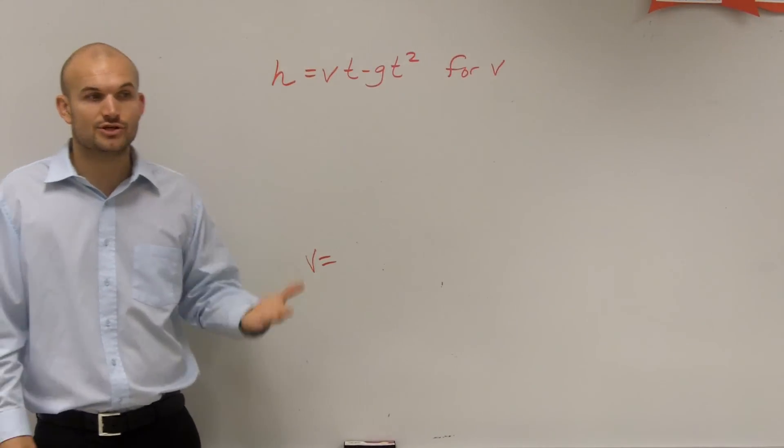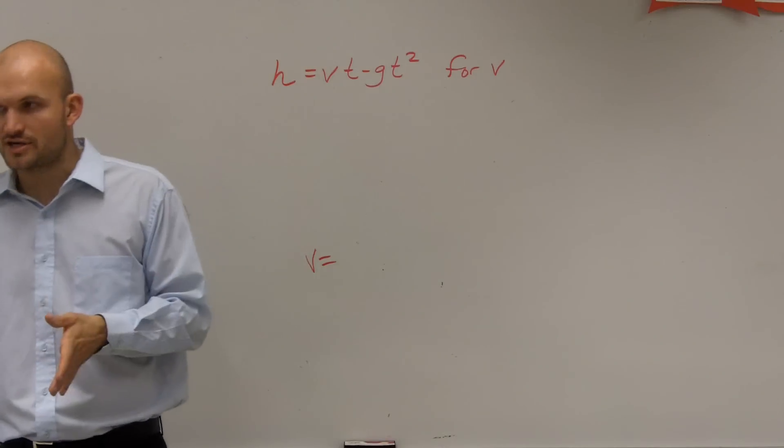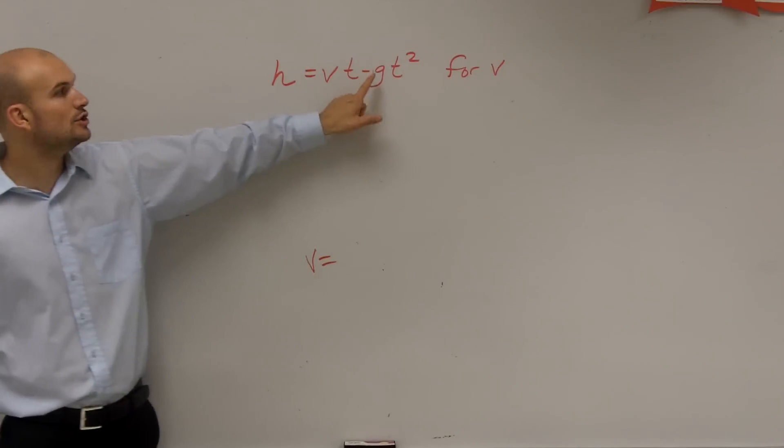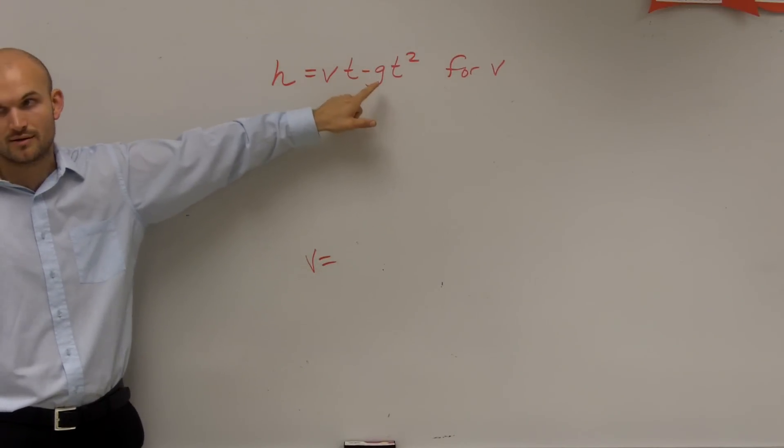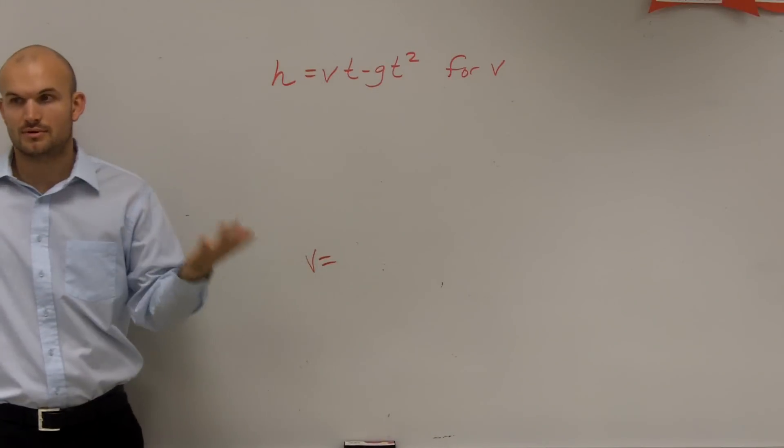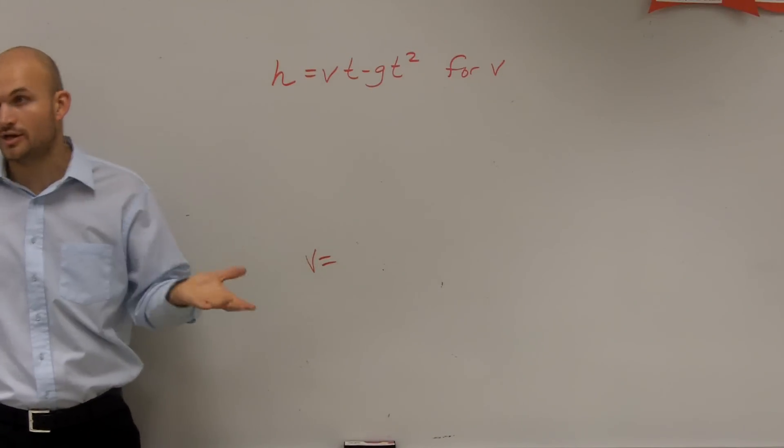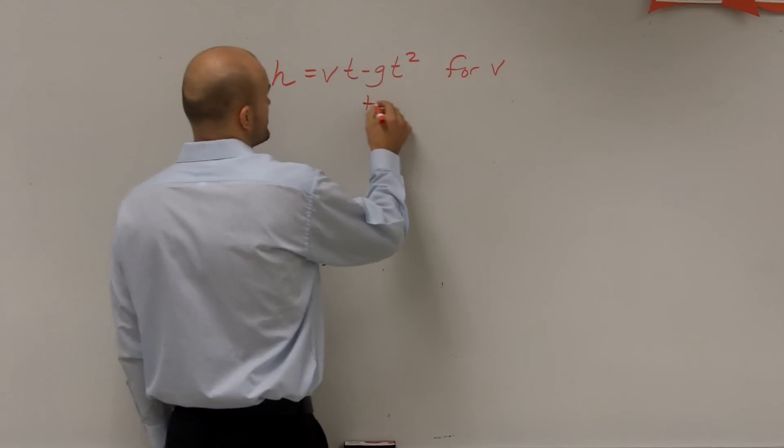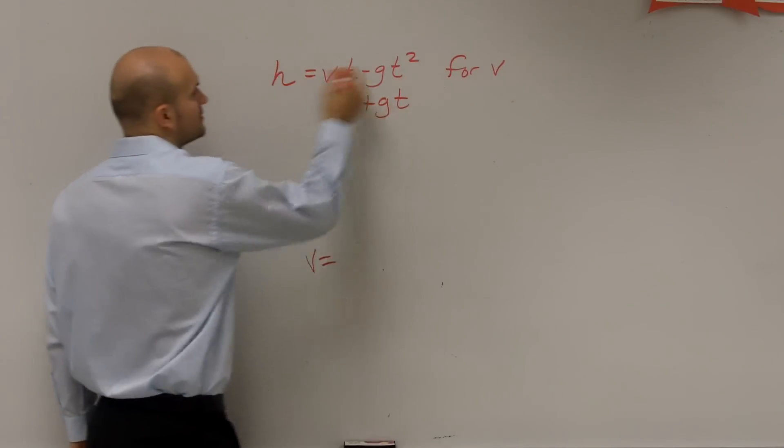So we always undo addition and subtraction first. So I'm going to have to undo subtraction of g times t squared. How do you undo subtraction? You're going to want to add, because subtraction and addition are inverse properties. So what I'm going to do is add g t squared to both sides.